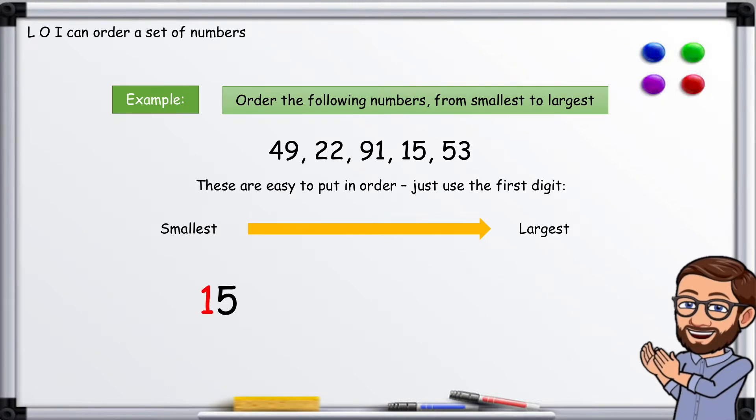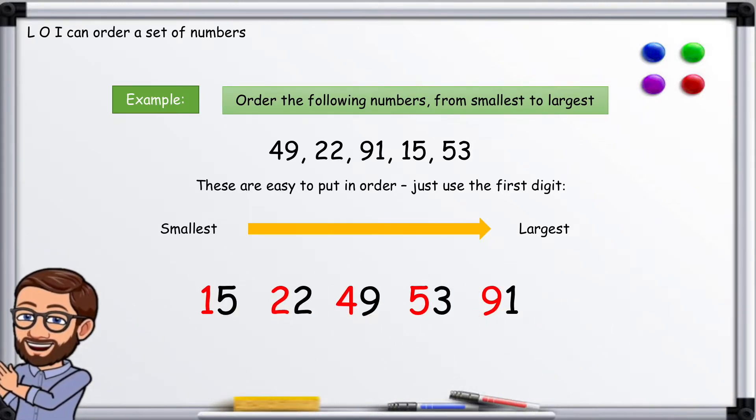The one in 15, so 15 would be first. The 2 in 22 is the next largest digit, so 22 would be next. 49 would be the next one. 53. And finally 91.